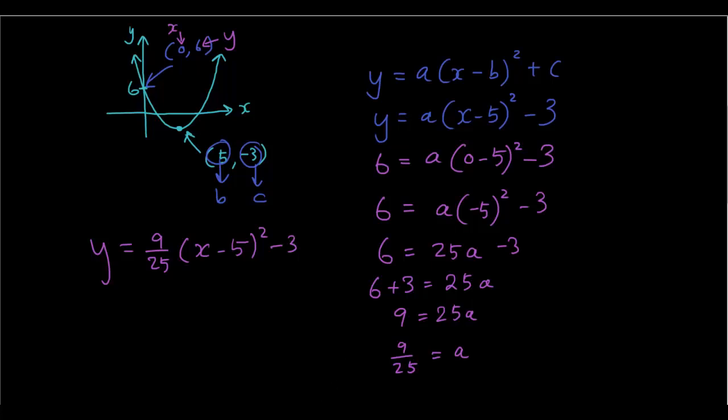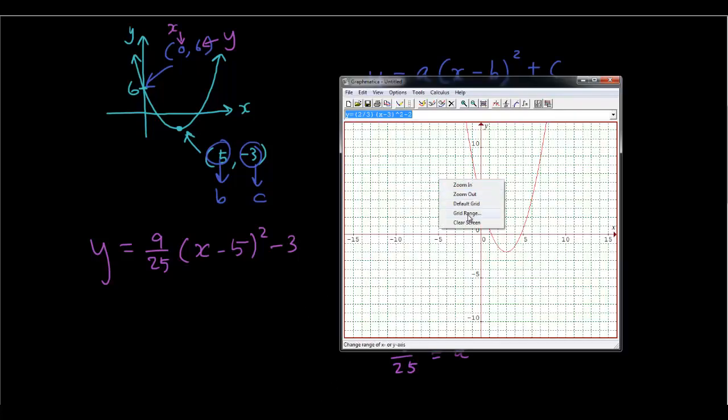So let's try that in graphmatica. y equals bracket 9 over 25 bracket x minus 5 squared minus 3. And it has indeed given us a graph where it touches the y axis at 6, and the graph turns at 5 and negative 3. So another successful attempt.